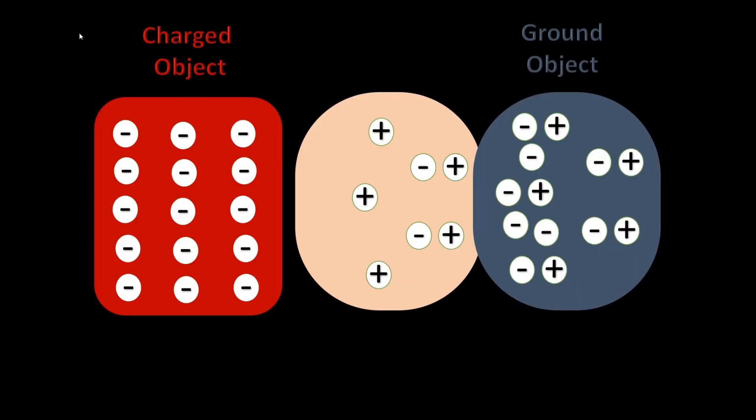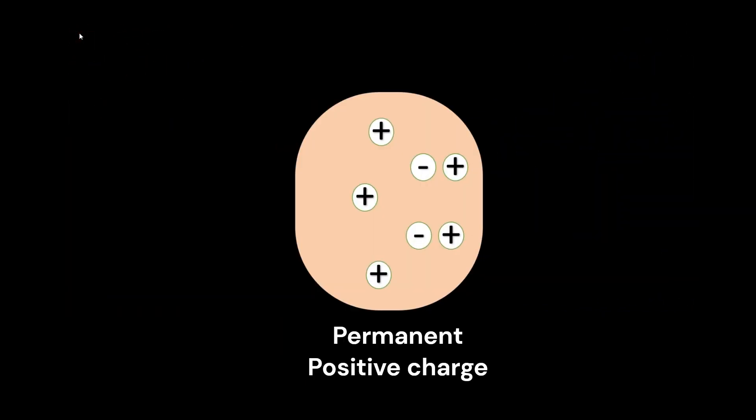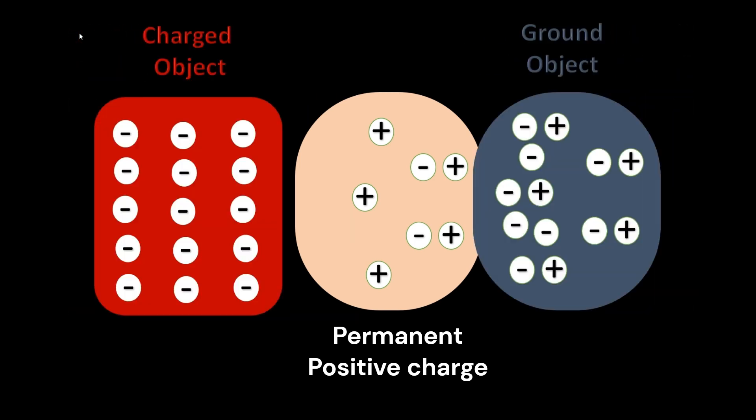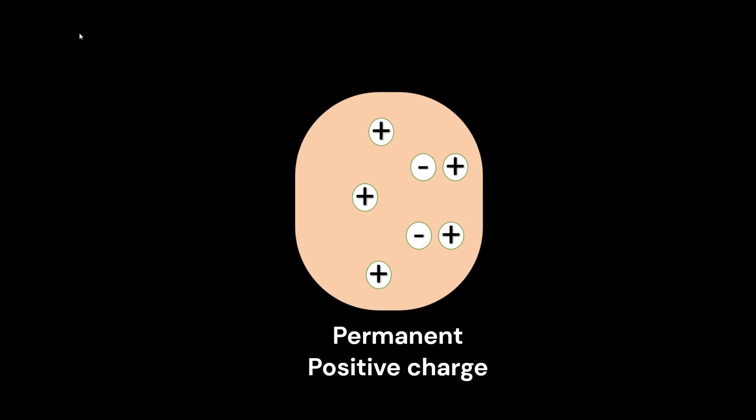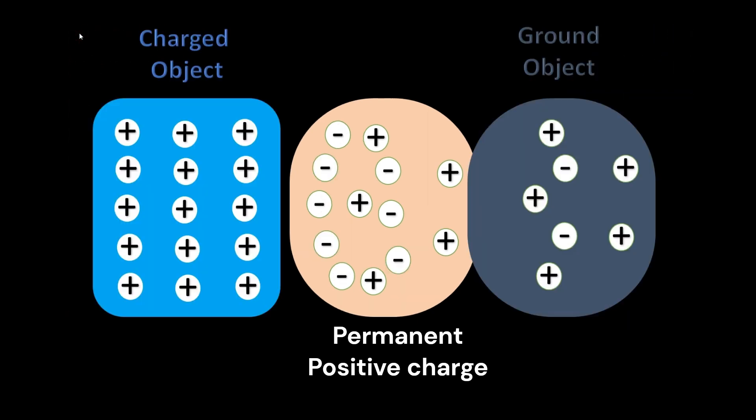Isolation in charging by induction refers to the separation or isolation of the charged object from the charged source and the ground object, leaving the polarized object in phase 2 as permanently charged.